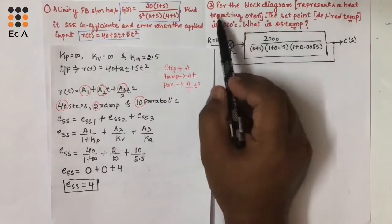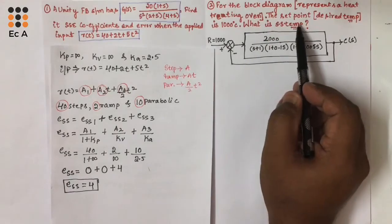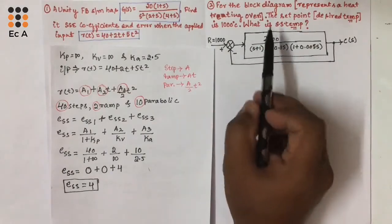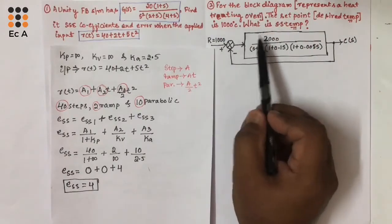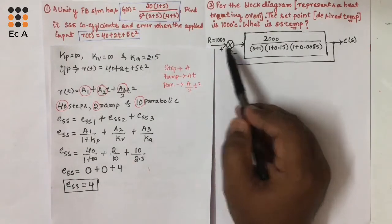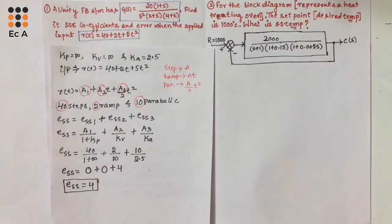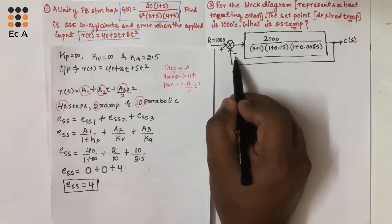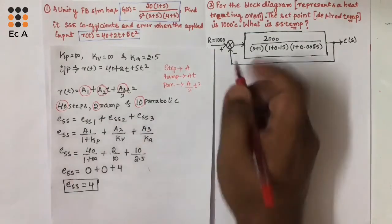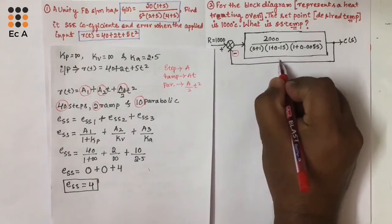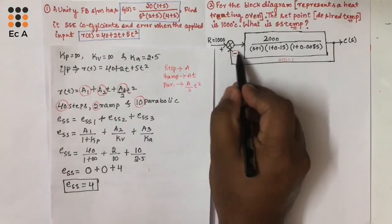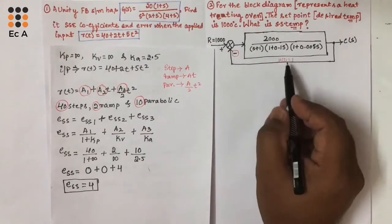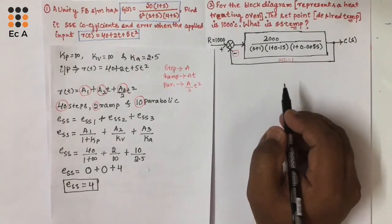Now let us solve the second problem. For a block diagram representing a heat treating oven, the set point (desired input) is 1000 degrees centigrade. We need to find the steady state temperature. Whenever a block diagram is given, always observe that H(S) should equal 1 and the feedback type should be negative feedback. If positive feedback is given, convert it to negative feedback before solving.